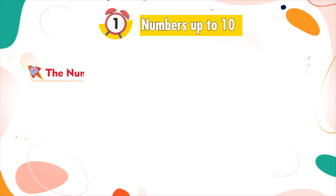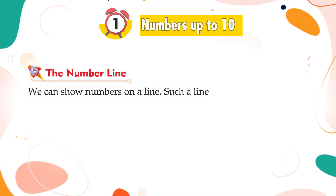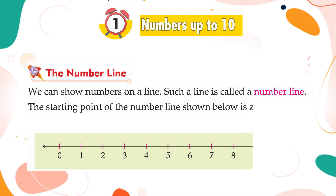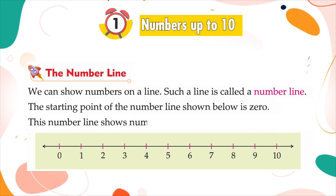The number line. We can show numbers on a line. Such a line is called a number line. The starting point of the number line shown below is zero. This number line shows numbers from zero to ten.